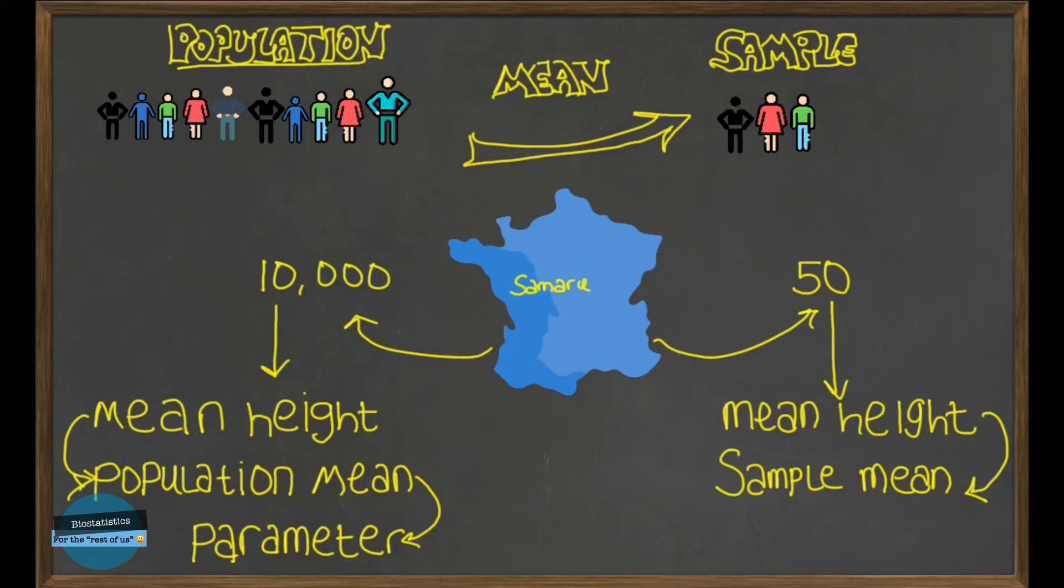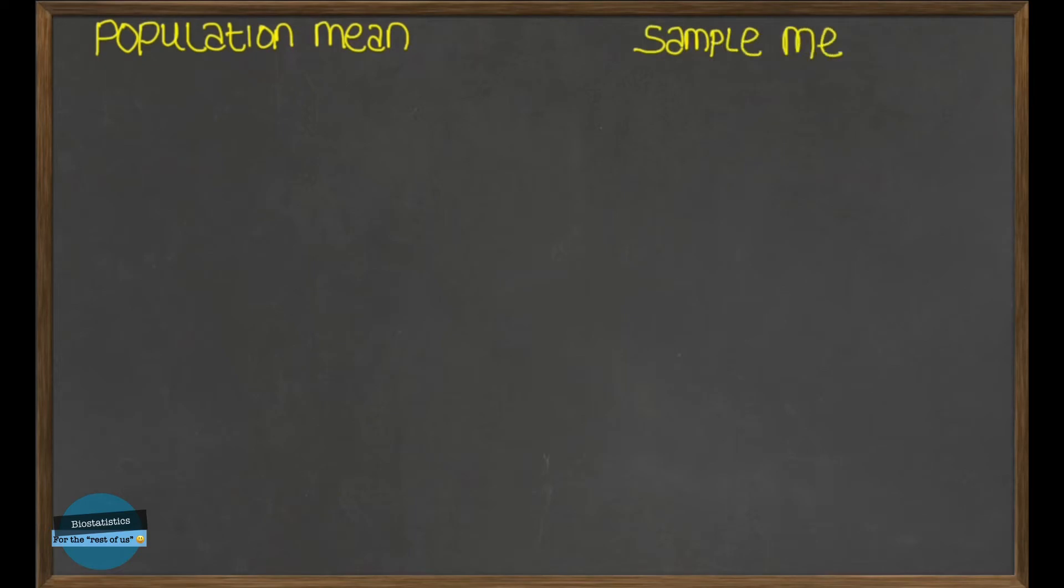And this is what is referred to as a statistic. And this is simply because it was obtained from the sample. A statistic is any measurable characteristic of a sample. Now, let's go ahead and see how we can compute these two, the population mean and the sample mean.